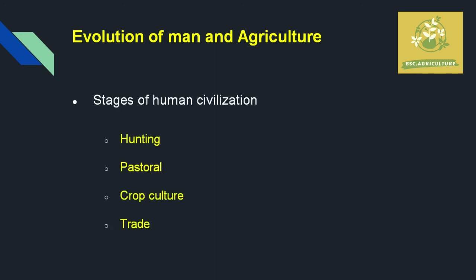While seeing the evolution of man and agriculture, the stages of human evolution begin with the Hunting Stage — before 10,000 BC, humans lived by killing animals. After that came the Pastoral Stage, where humans shifted from place to place in search of food for themselves and their animals. Then came Crop Culture, where humans stayed in one place and produced their own food — this is where agriculture truly began in human life.